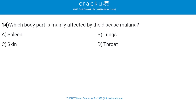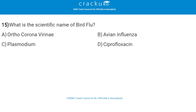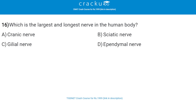Next, which body part is mainly affected by the disease malaria? The correct answer is spleen, that is option A. Next, what is the scientific name of bird flu? The correct answer is avian influenza, that is option B. Next, which is the largest and longest nerve in the human body? The correct answer is sciatic nerve, that is option B.